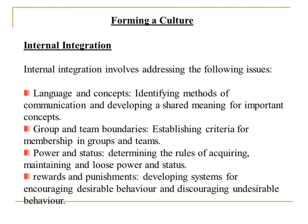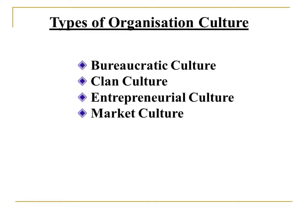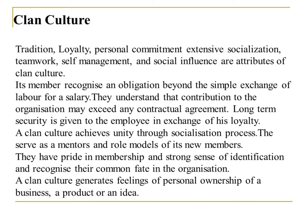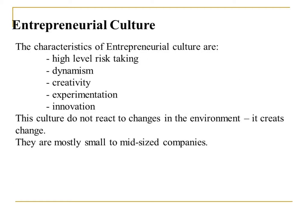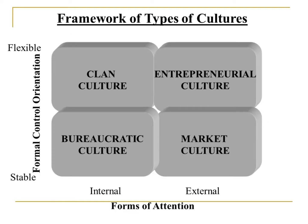The intergroup team building meeting typically involves five steps: A. Working separately — the two work groups make lists of how they see themselves, how they think the other group sees them, and how they see the other group. B. The two groups meet and a person from each group presents their lists. C. The two groups meet separately to discuss. D. Subgroups are formed by mixing members of the two groups and these groups develop action plans. E. A follow-up evaluation meeting is held.